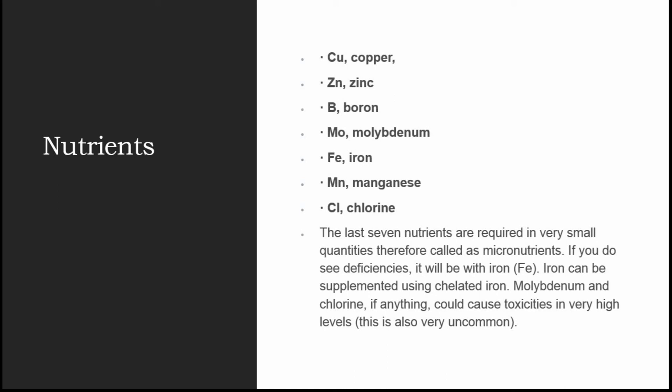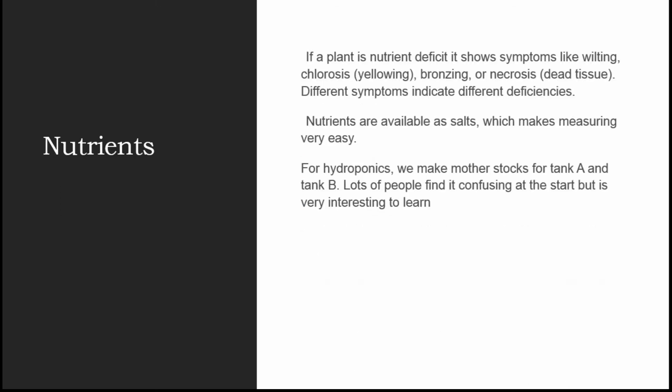These last seven nutrients are required in very small quantities and are therefore called micronutrients. If you see deficiencies, it will most likely be with iron — iron can be supplemented through chelated iron only. Anything that could cause toxicity at very high levels is molybdenum and chlorine, though this is very uncommon. If a plant is nutrient deficient, it shows symptoms like wilting, chlorosis (yellowing), bronzing, or necrosis (dead tissues) — different symptoms indicate different deficiencies.